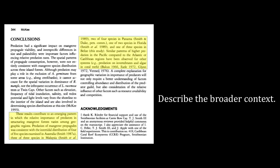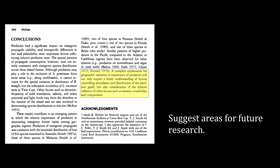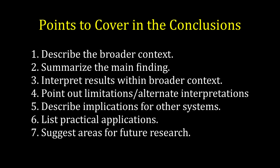The second paragraph puts the work into a global perspective by summarizing findings from different geographic regions. The section ends with a recommendation that other factors need to be considered in future studies of mangrove zonation. Those are just a couple of examples to illustrate how to write a conclusion section using this list of possible points to cover.